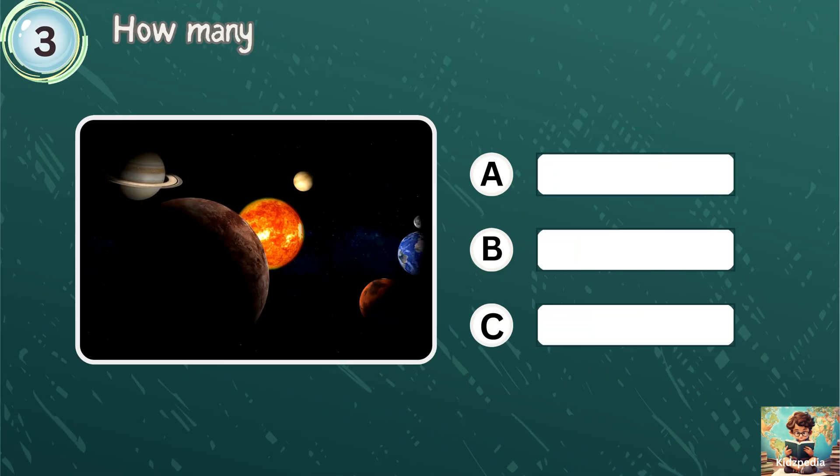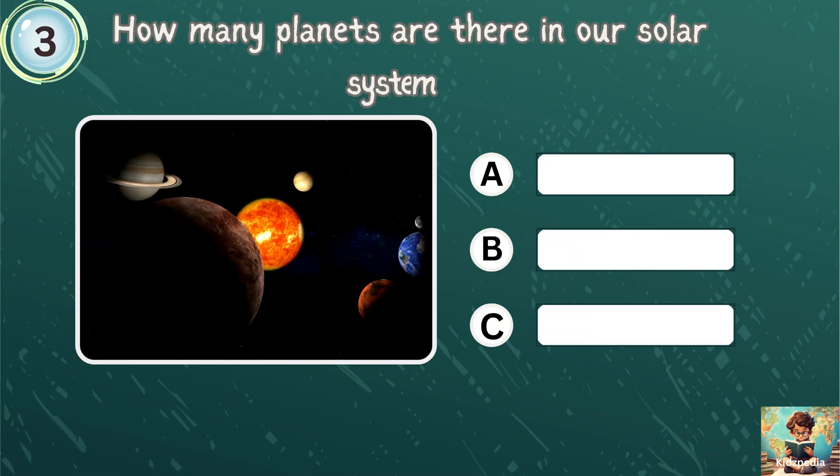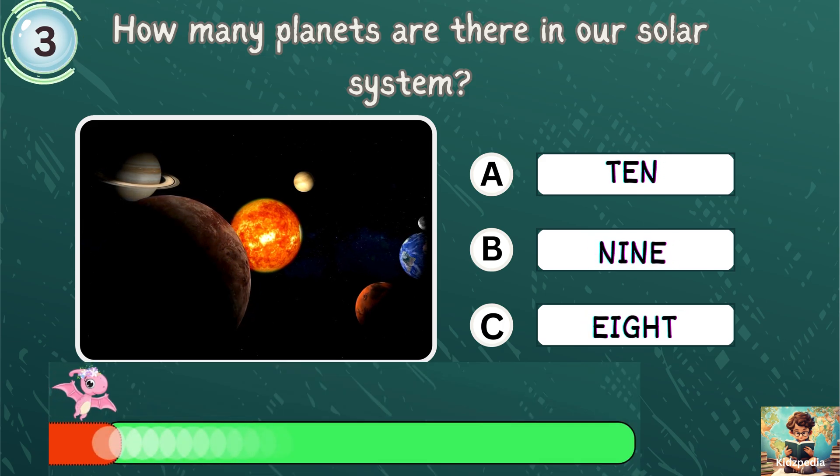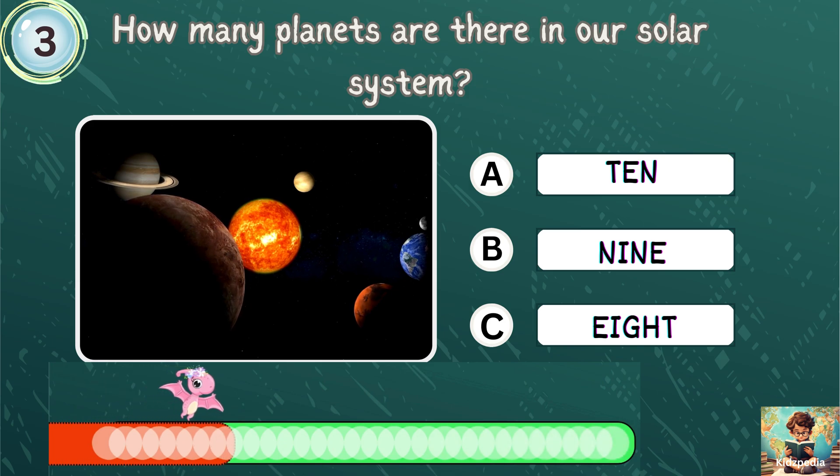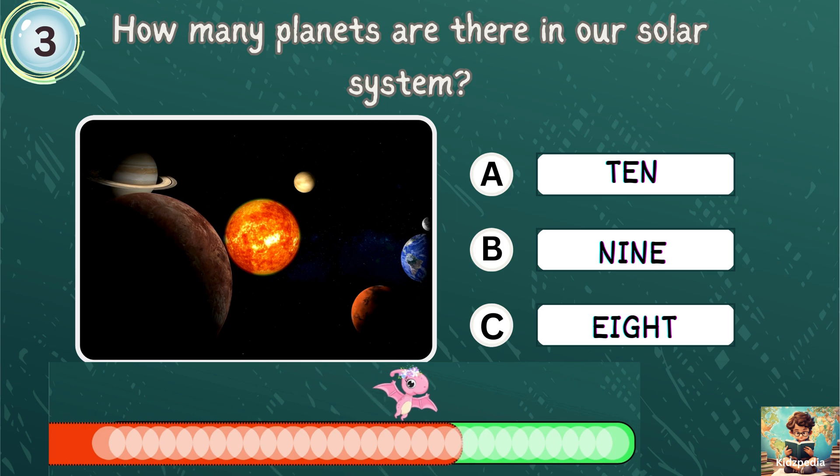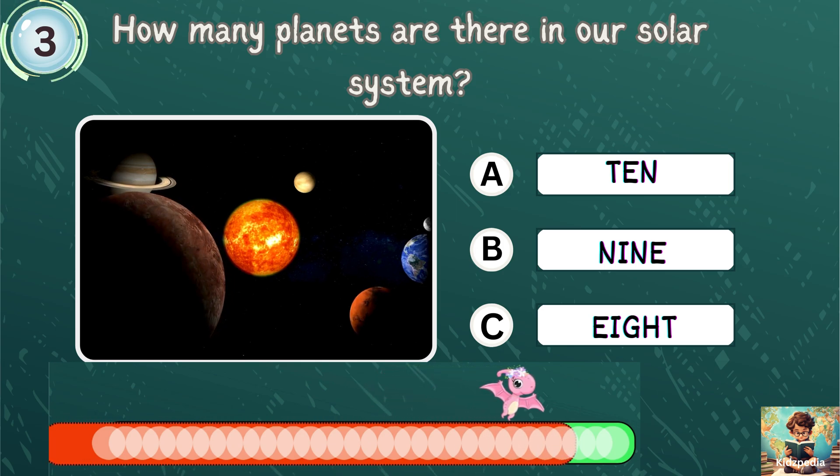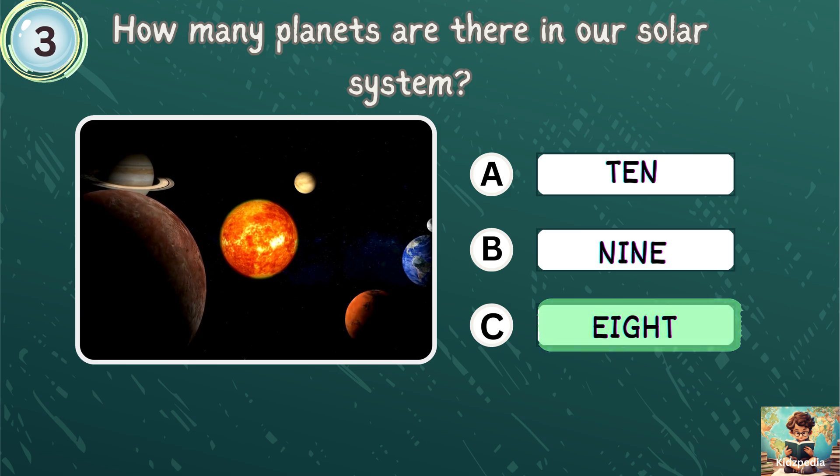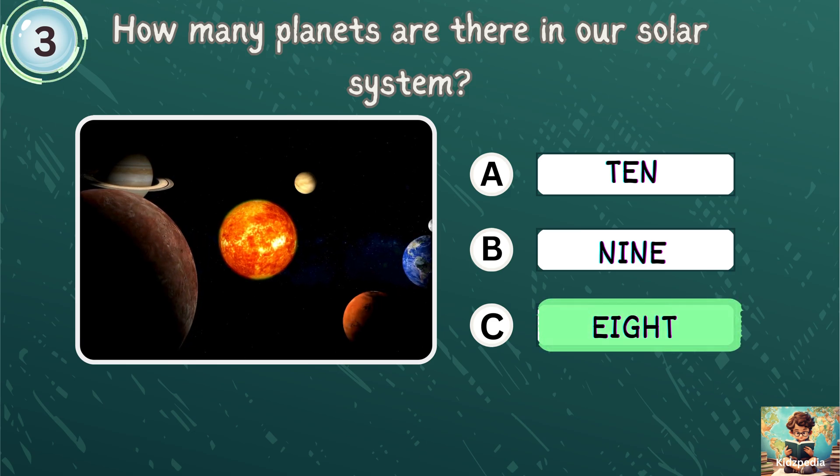How many planets are there in our solar system? 10, 9, 8. That's right. 8 is the correct answer. We have 8 planets in our solar system.